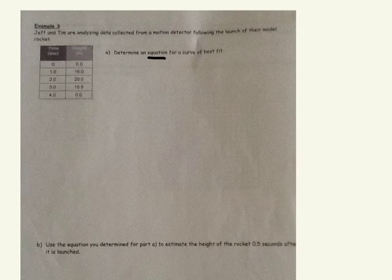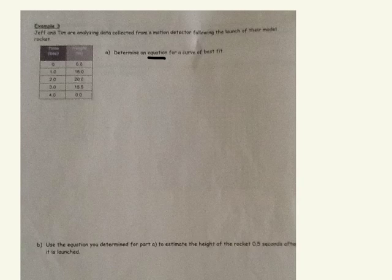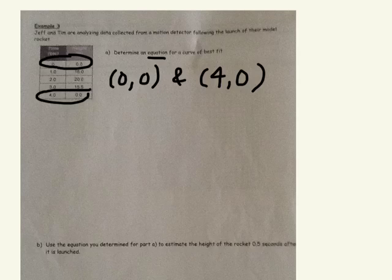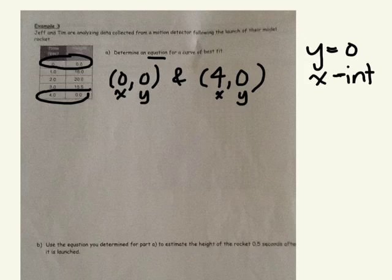So first we want to look at these two coordinates: 0, 0 and 4, 0. Where are these points going to be on a graph? They're the x-intercepts, the zeros of the relation because y is 0. Anytime y equals 0, you know it's going to intercept the x-axis. So we actually know our two x-intercepts.